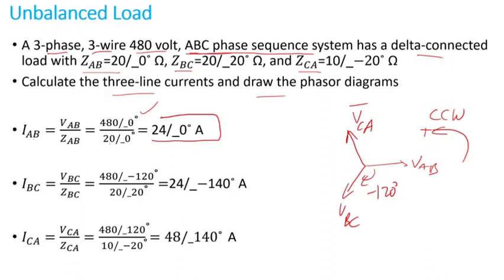Then I_BC is V_BC divided by Z_BC. Again, V_BC lags V_AB by 120 degrees, so that's why you see negative 120 degrees here. So 480 with an angle of negative 120 degrees divided by 20 with an angle of 20 degrees gives me 24 amps with an angle of negative 140 degrees.